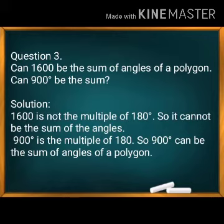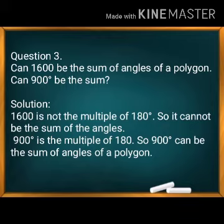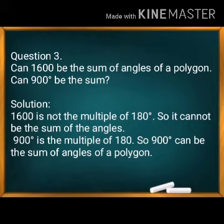Problem 3: Can 1,600 degrees be the sum of angles of a polygon? Can 900 degrees? From the formula, the sum of interior angles is always a multiple of 180 degrees. Checking: 1,600 is not a multiple of 180, so it cannot be the sum of angles of any polygon. But 900 is a multiple of 180, so 900 degrees can be the sum of angles of a polygon.